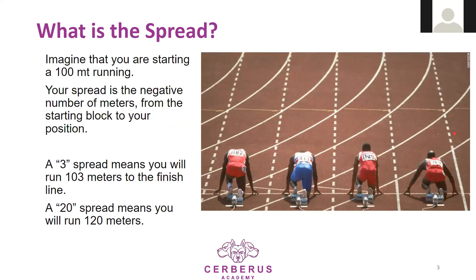Another example: if you are starting a 100-meter race, the spread is the number of negative meters you are starting from your block. So a spread of 3 means you will run not 100 meters but 103 meters, because you are starting three meters earlier. A spread of 20 means 120 meters. Spread is the commission we are paying to the bank — the lowest, the better.